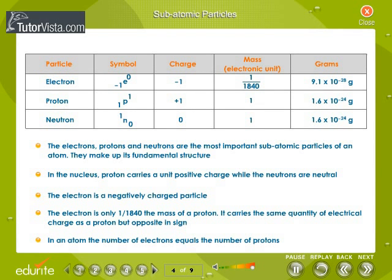Subatomic particles. The table illustrates a comparative study of protons, electrons and neutrons. The protons, electrons and neutrons present in the atom are collectively called subatomic particles. The number of protons and neutrons is equal to the total number of negative charges. And since the neutrons have no charge, the atom is always neutral.